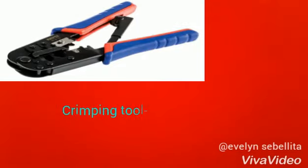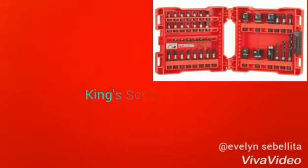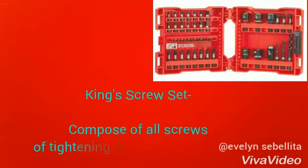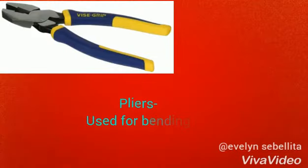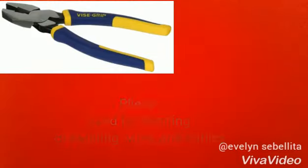Crimping tools: used for crimping wires. Screw set: composed of all screws used in tightening and loosening tools. Pliers: used for bending and twisting wires or cables.